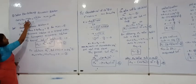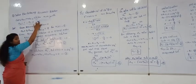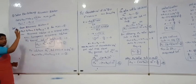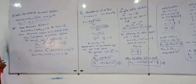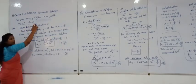So LHS, RHS. RHS value is 8. So this is homogeneous or non-homogeneous? Non-homogeneous. Because here the value is a non-zero value.